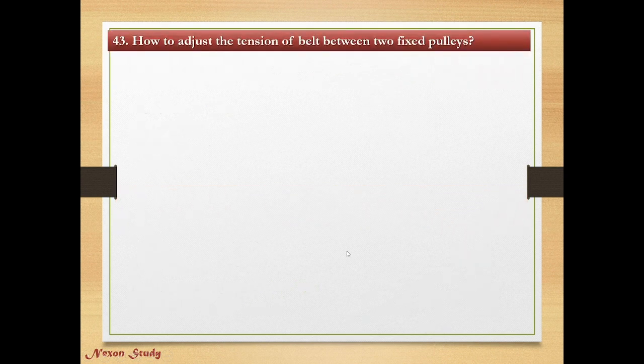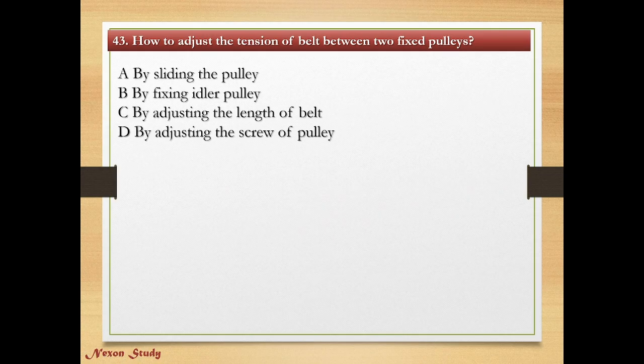Question: How do you adjust the tension of a belt between two fixed pulleys? Options: by sliding the pulley, by fixing an idler pulley, by adjusting the length of belt, by adjusting the screw of pulley. Right answer is by fixing an idler pulley.